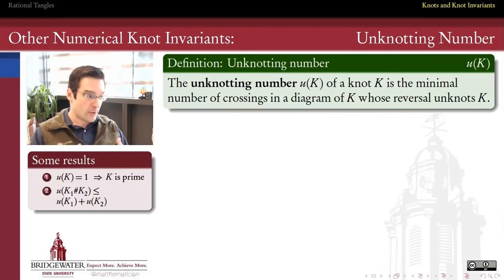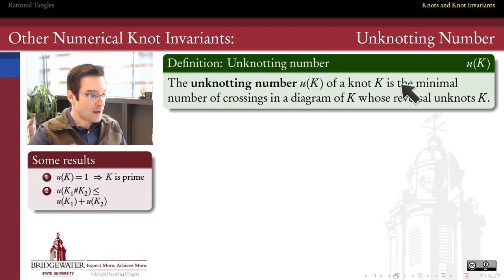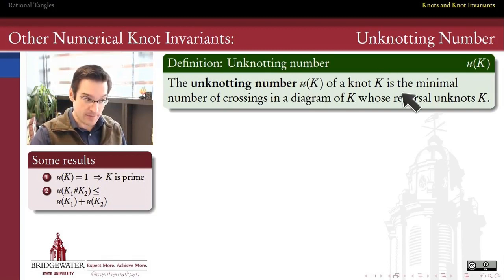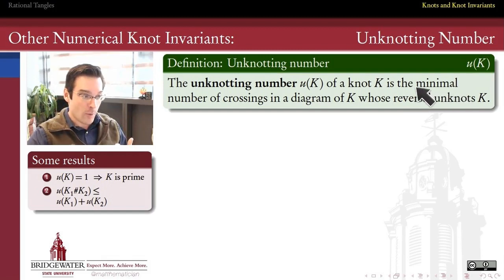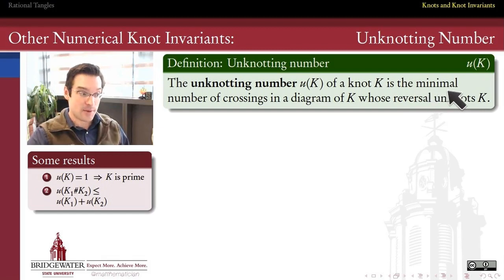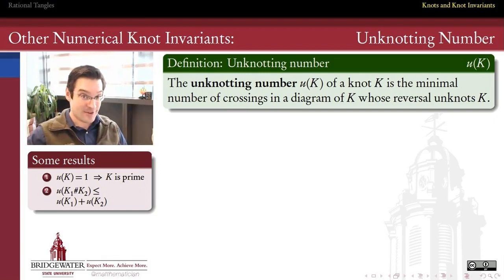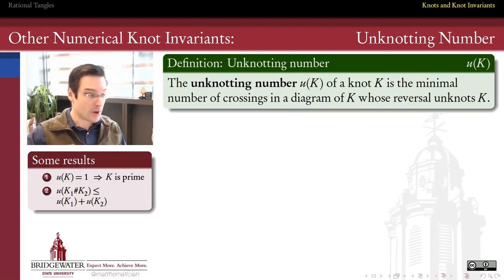The first invariant we'll meet is called the unknotting number of a knot. We define the unknotting number to be the minimal number of crossings that we need to change in a diagram in order to turn that diagram into the diagram of an unknot. One of the key words in the definition is the word 'minimal.' This is what makes it depend only upon the underlying topology of the knot and not on the diagram itself, but it's also what makes these numbers very slippery and difficult to work with sometimes.